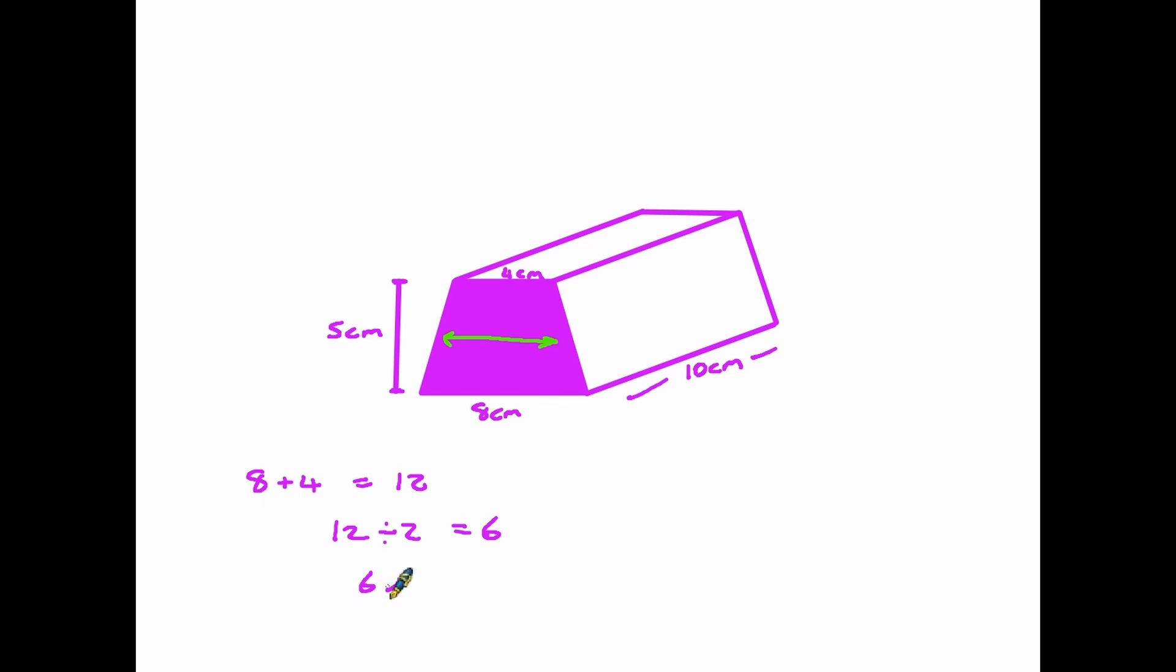We need the average width of the trapezium because now we take that 6 as the width and multiply it by the 5, which is the height, and that gives us 30 centimeters squared. That is the area of the front. We are now, having done the complicated bit, going to take that area, the 30, multiply it by the length, the 10 centimeters, and we will get 300 centimeters cubed.